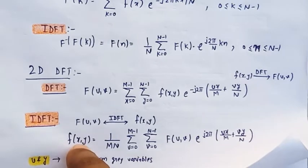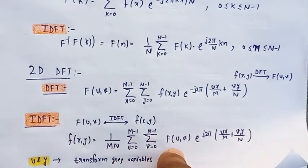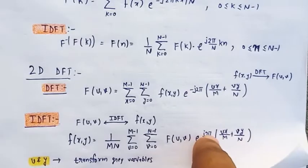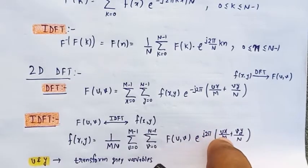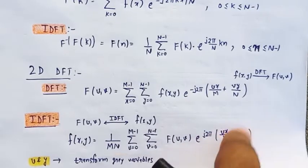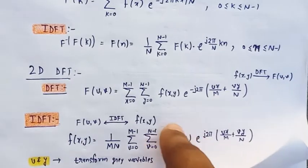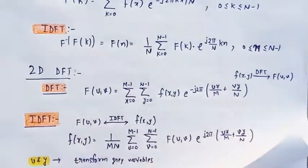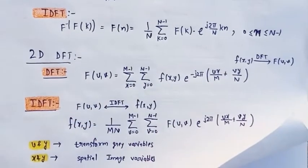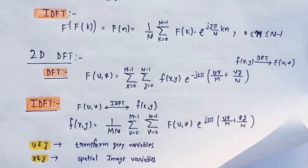This is the original signal - don't forget it. F(u,v) * e^(j2π(ux/M + vy/N)). What is u and v actually? It is transformed gray variable. x,y is your spatial image variable. Why? Because our input image is spatial domain and the output we want in frequency domain. That's why there are the transformed gray variables.